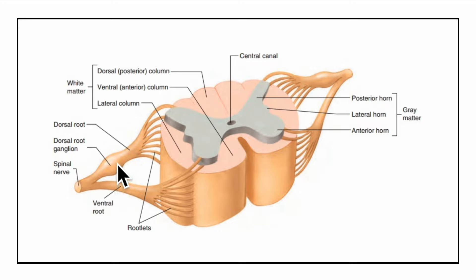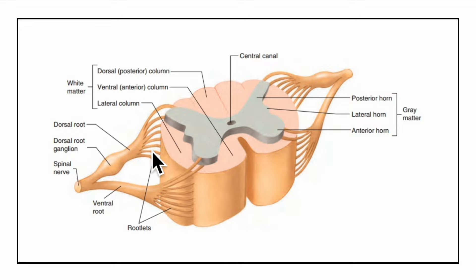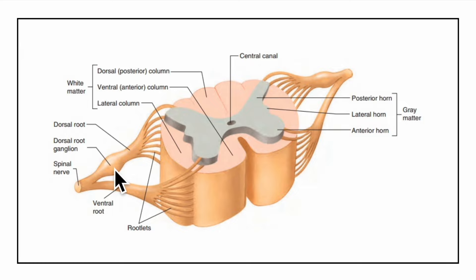The dorsal root ganglion is a collection of cell bodies in the peripheral nervous system. As the dorsal rootlets converge, there is a swelling called the dorsal or posterior root ganglion, which houses the cell bodies of all the sensory neurons in that particular nerve. These neurons are pseudounipolar in type.